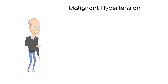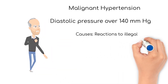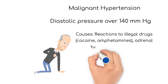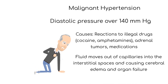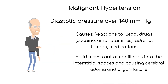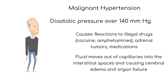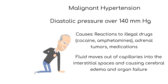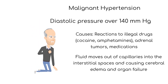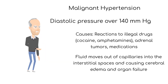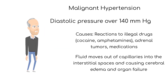Malignant hypertension is characterized by a diastolic pressure greater than 140 millimeters of mercury. Causes include reactions to drugs such as cocaine and amphetamines, adrenal tumors, and medication reactions. Malignant hypertension causes movement of fluid out of capillaries into the interstitial spaces and can cause cerebral edema and organ failure.